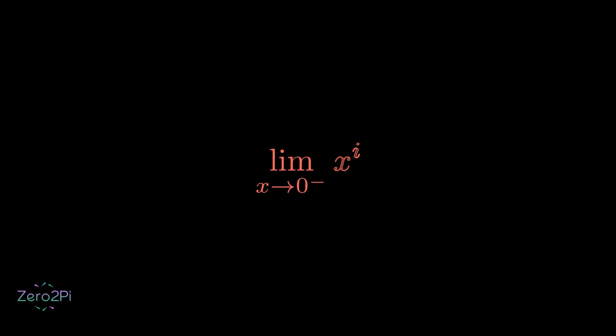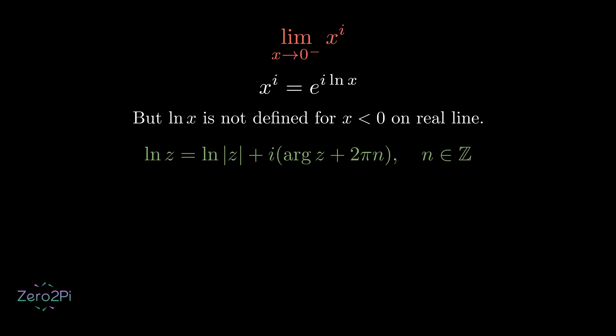Moving forward, now let's see what happens if we approach zero from the other direction, meaning as x approaches zero from the negative side. This is an interesting point, and I want your full attention here. Remember earlier I mentioned that the limit of x raised to the power i doesn't exist in general. The reason is that the standard natural logarithm is not defined for negative numbers on the real line. To make sense of it, we turn to the complex logarithm, which gives us a more complete picture.